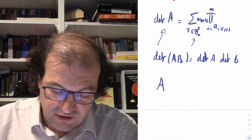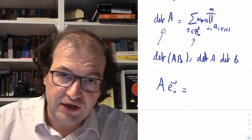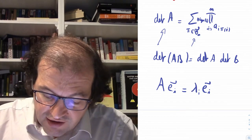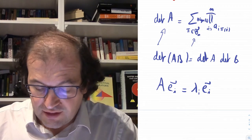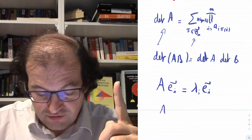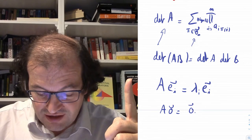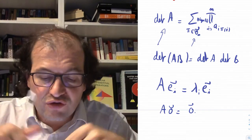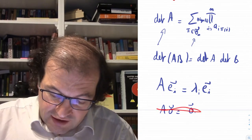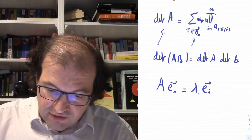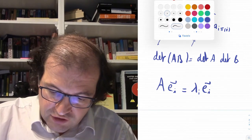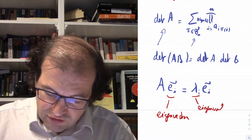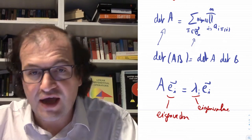If we have a vector eᵢ such that the application of the matrix to that vector stays along the same line — possibly rescaled by λᵢ — then eᵢ is called an eigenvector and λᵢ is called an eigenvalue. The vector itself must be non-zero, though the eigenvalue λᵢ is allowed to be zero.